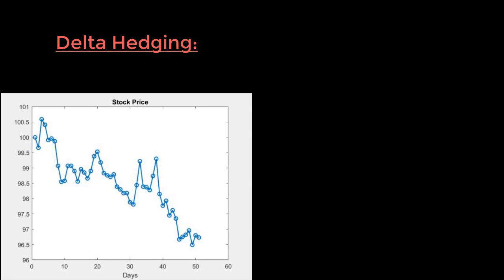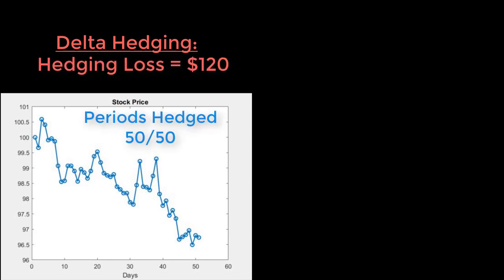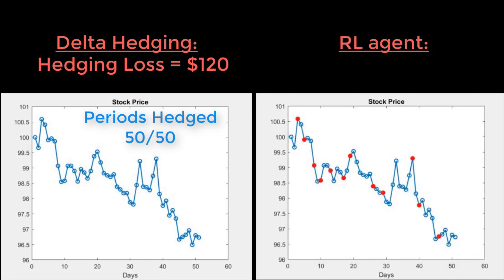We simulate a random stock path. When all periods are hedged, the loss is $120. The agent hedged 38 periods and didn't trade 12 times, and the loss is $55.